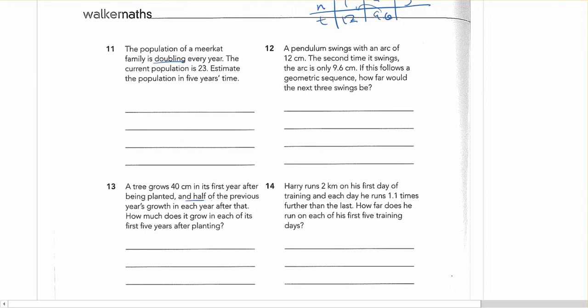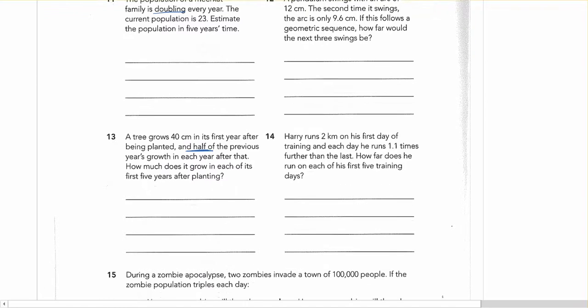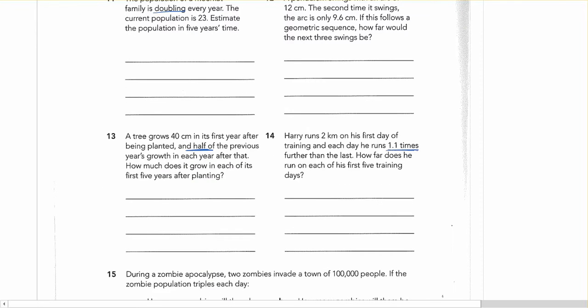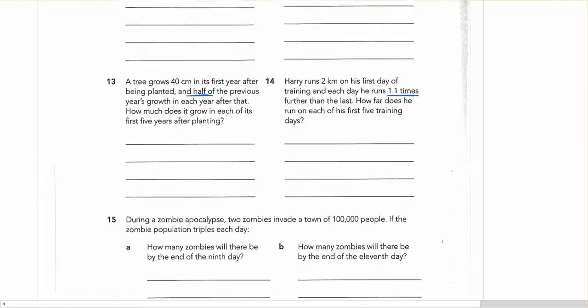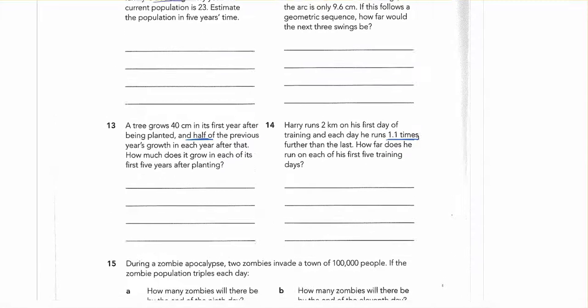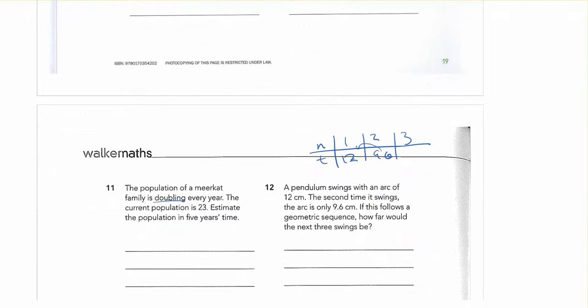And keywords again like half, well that's multiplying by 0.5 or multiplying by a half. And language like 1.1 times, that's your r value. That's how much it's increasing by each time. So you've got to problem solve your way through those a little bit. Let's see how you go.